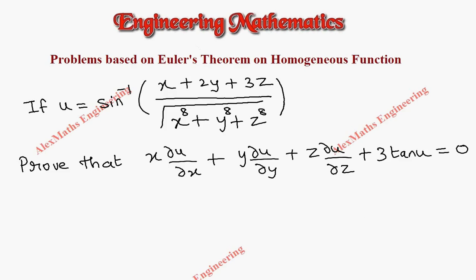Hi students, this is Alex. In this video we are going to discuss a problem based on Euler's theorem of homogeneous functions. There is a function u = sine inverse of (x plus 2y plus 3z) divided by the eighth root of (x power 8 plus y power 8 plus z power 8).